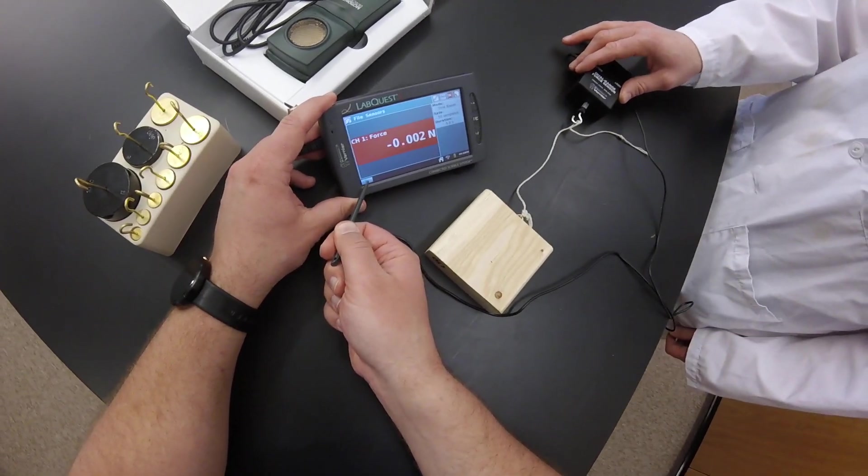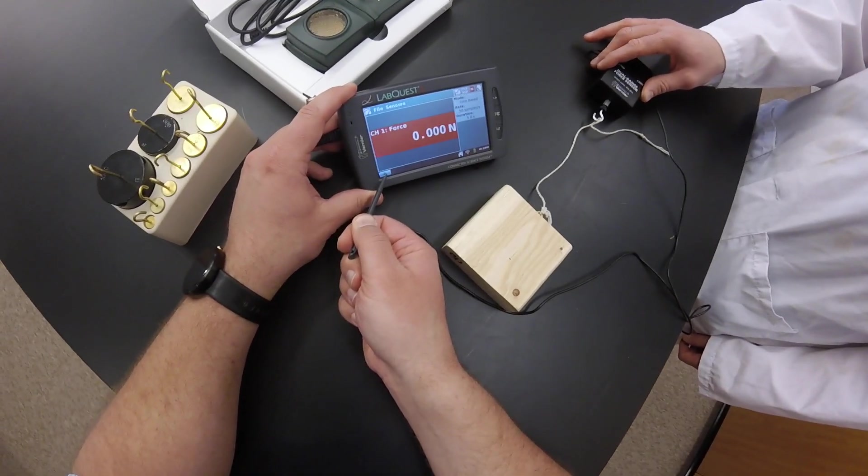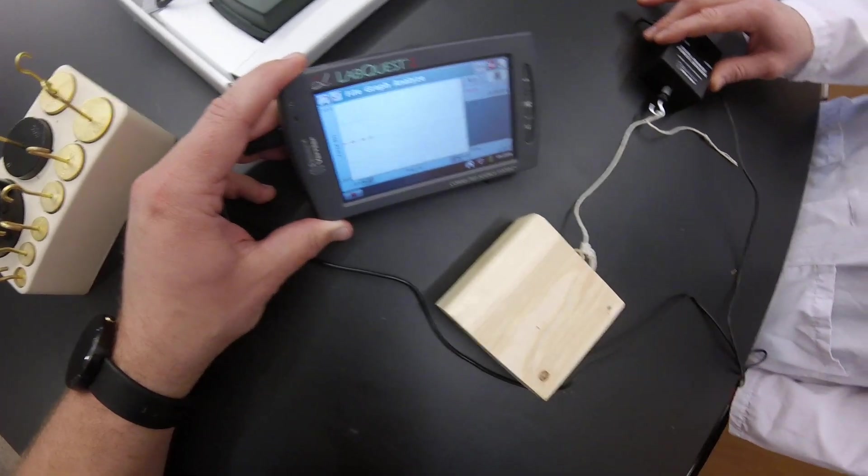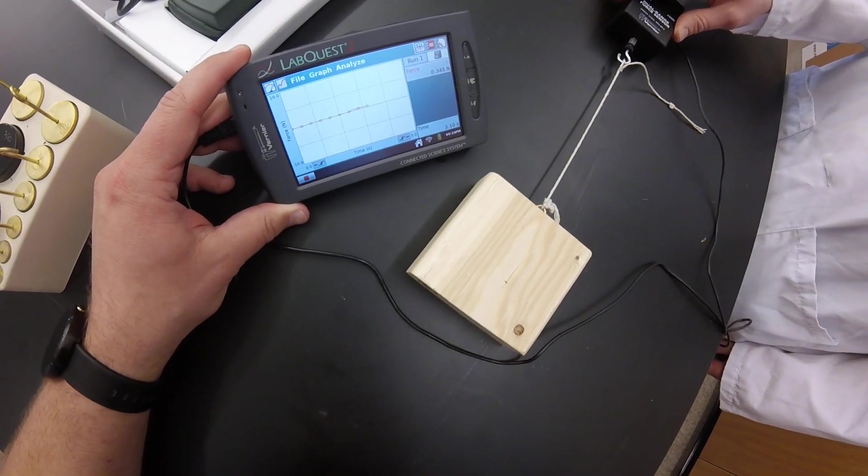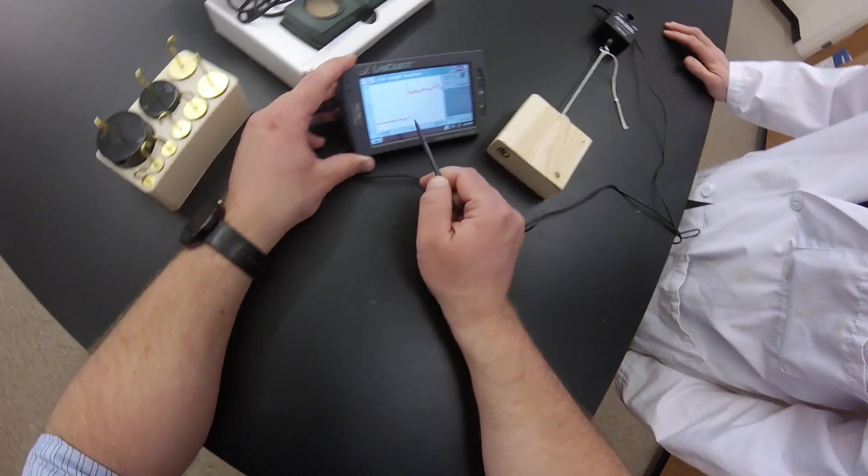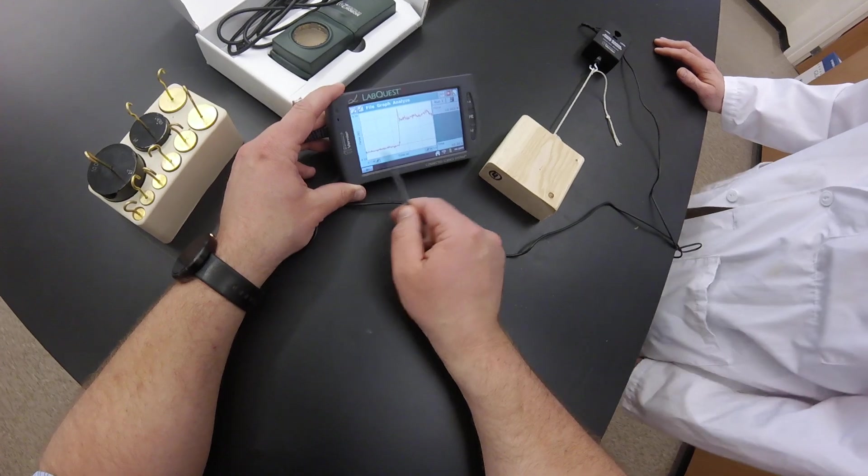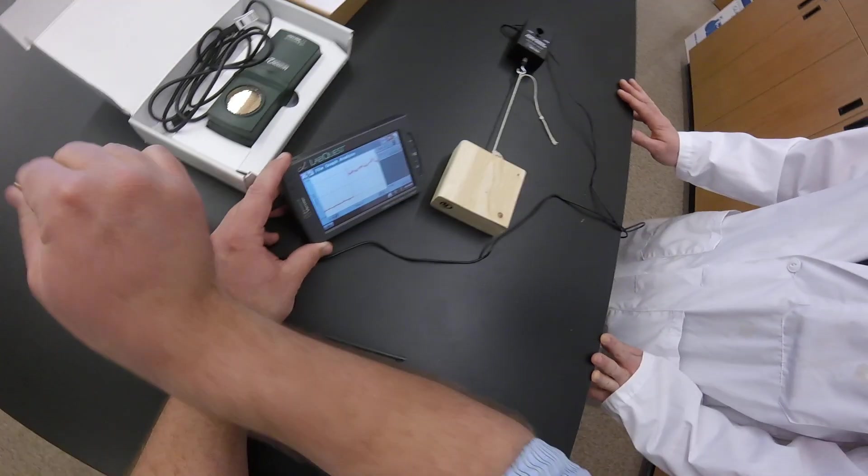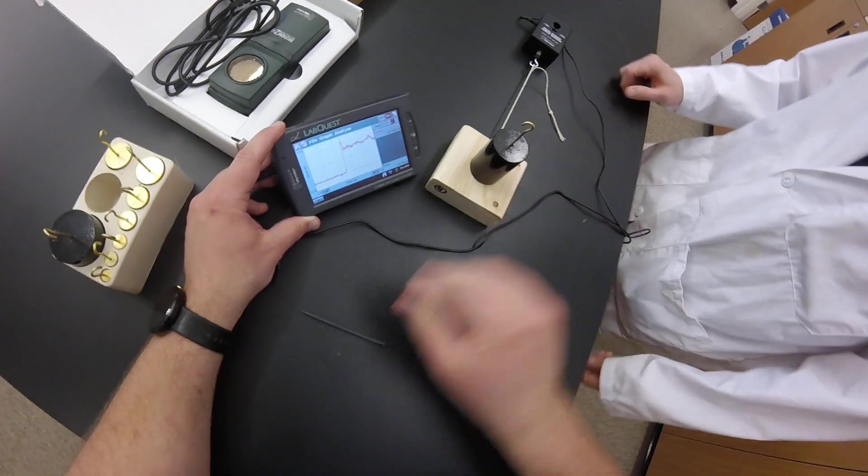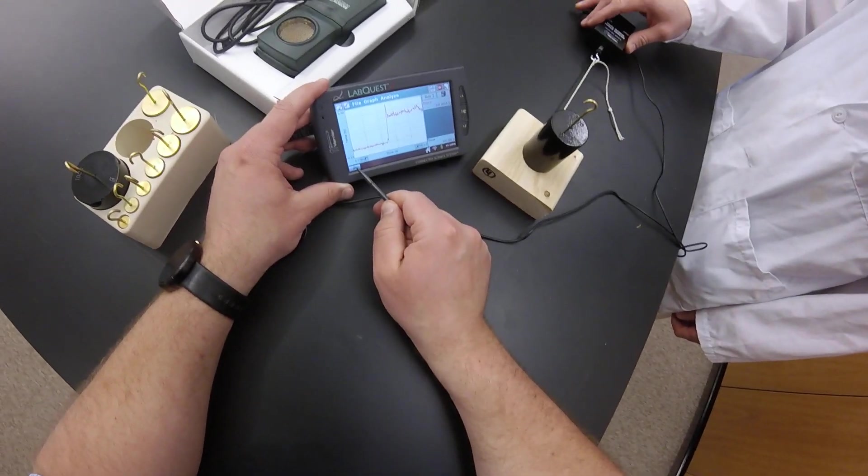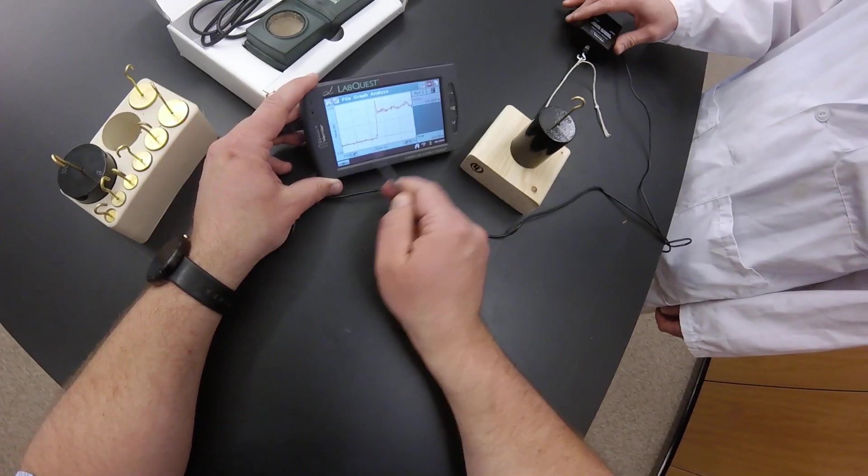He's going to start off gently and then pull faster, a little bit more and a little bit more until it starts to move. Perfect. So this is a good set of data. We're going to repeat it right now. We're going to add a little bit of mass to the block and see if we can get a similar shape. And so you can see the force versus time graph made.